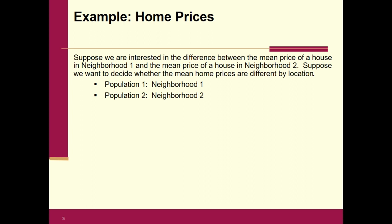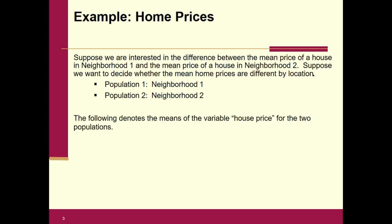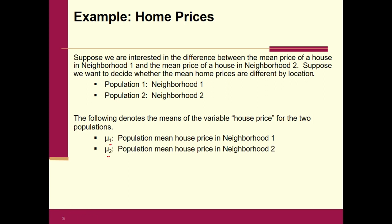The variable we're collecting from each population is the house prices. We're going to have two population means, and we need some extra notation. We'll use subscripts: mu one is the population mean from neighborhood one, mu two from neighborhood two. We also have two samples — x-bar one, x-bar two, s one, s two, n one, and n two.